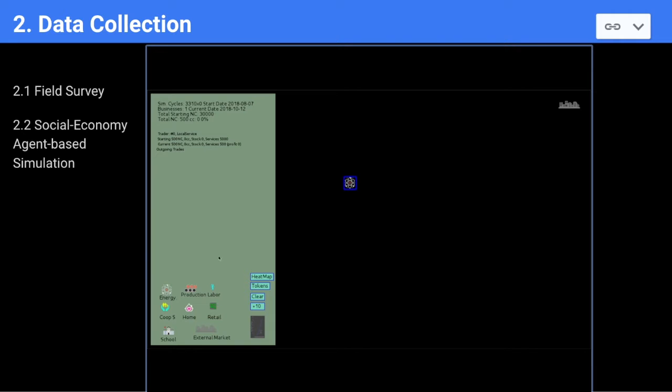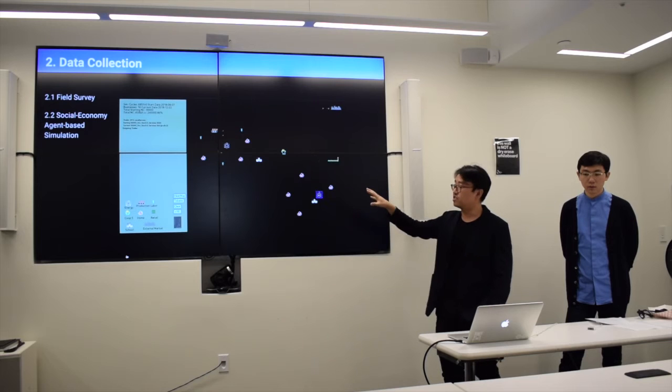You can add laborers, co-op services, households, and they will interact with each other with the flow of energy, tokens, and also services. And also, there's an external market that they interact with. Of course, there will be a lot of assumptions.